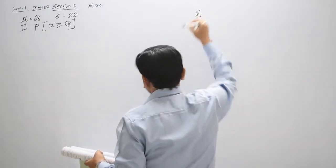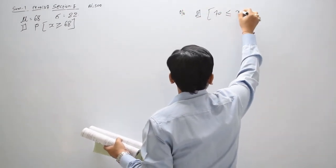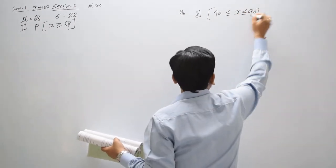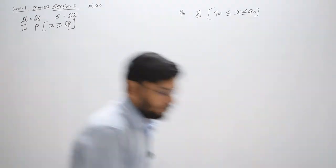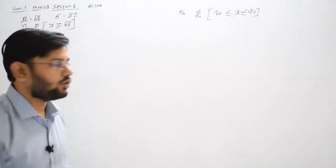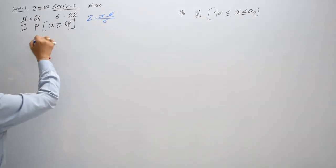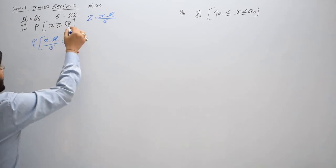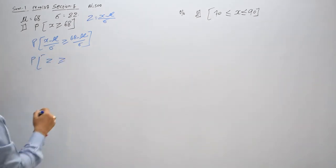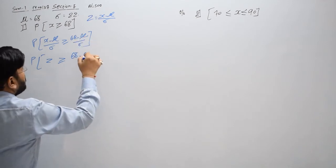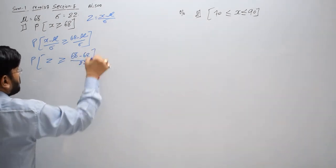Second question ki baat karte hain — unhone kya bola hai: find out the percentage of children getting marks between 70 to 90, toh P(70 < X < 90). Ab pehle question ke liye, X ko standard normal variable Z mein convert karna padega: Z = (X − mu) / sigma = (68 − 68) / 22.